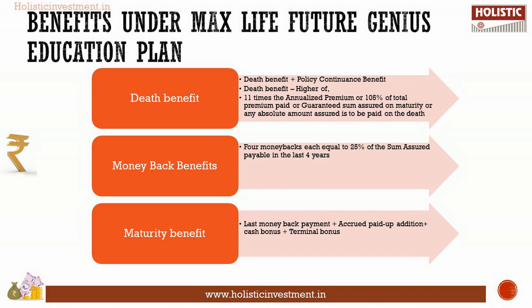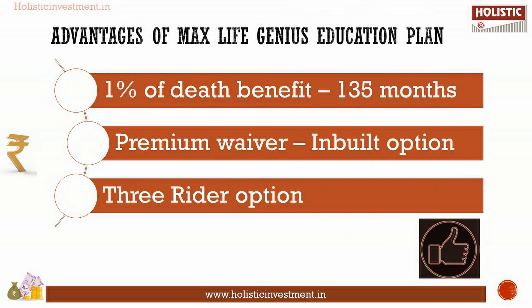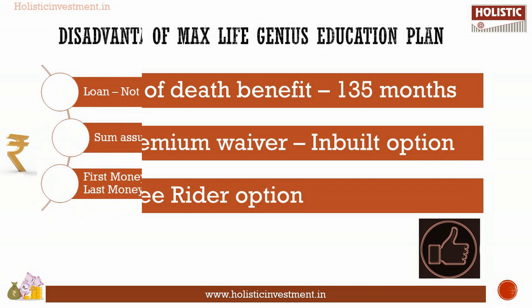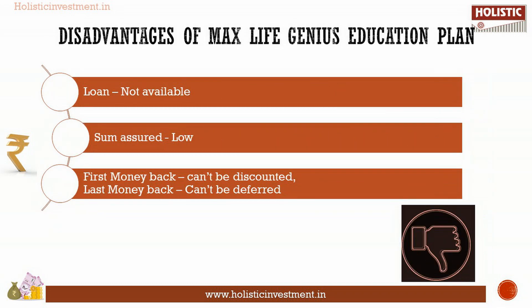Now we shall discuss the advantages and disadvantages of Max Life Future Genius Education Plan. Advantages: the nominee can choose to take one percent of the death benefit as monthly income, payable for 135 months. Premium waiver is an inbuilt option. Three rider options are available.